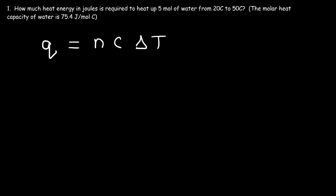Q represents the heat energy in joules, n is the number of moles, C is the molar heat capacity, and delta T represents the change in temperature. So our goal is to calculate the value of Q. We have 5 moles of water, so that's n.